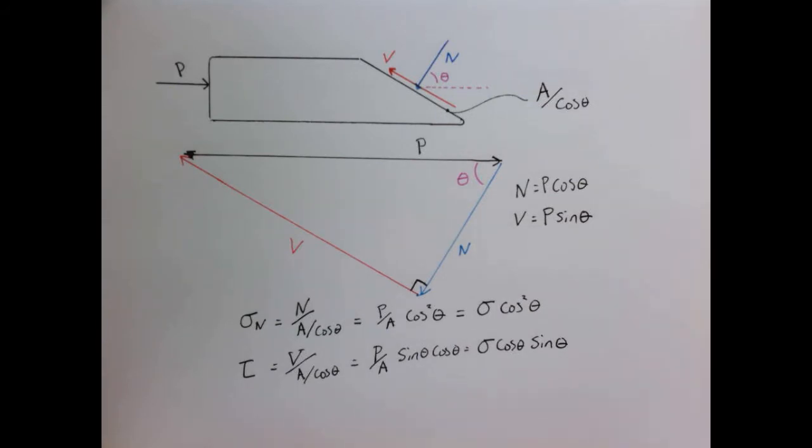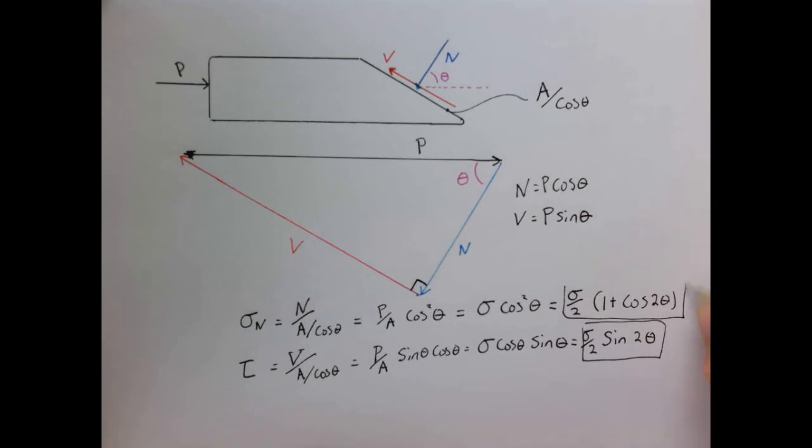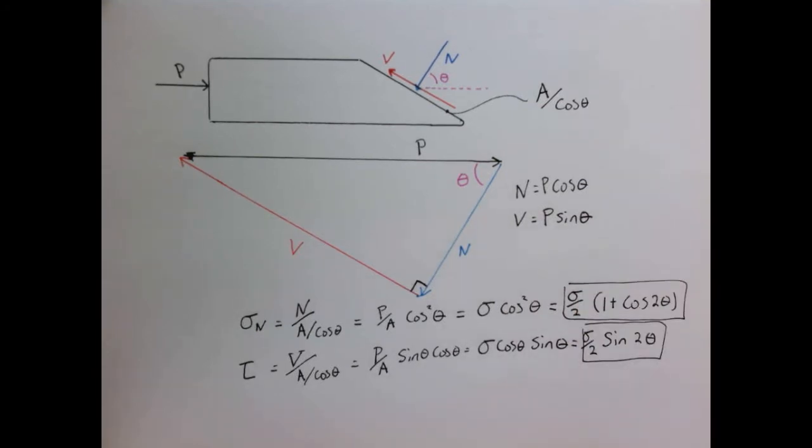Now, you might remember some of your trigonometric identities. We can write different relationships for cosine squared and the cosine theta times the sine theta as follows. So we get sigma over two times one plus the cosine of two theta, and sigma over two times the sine of two theta.